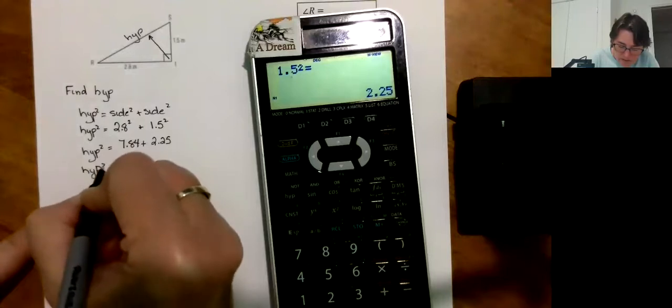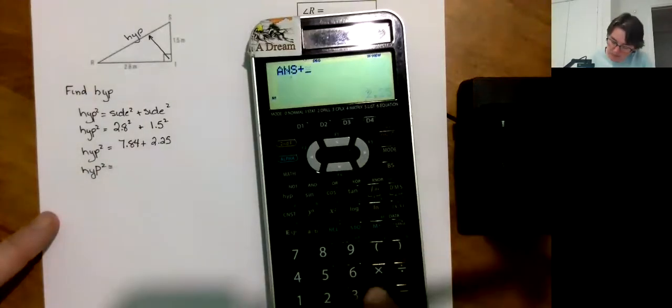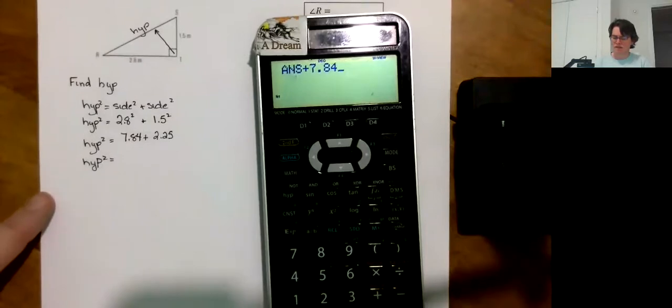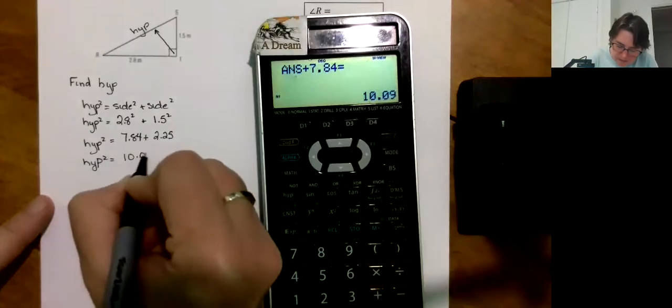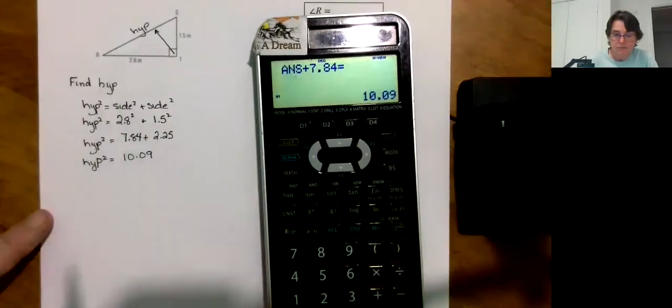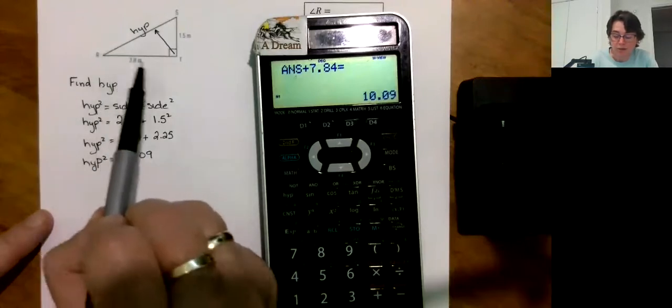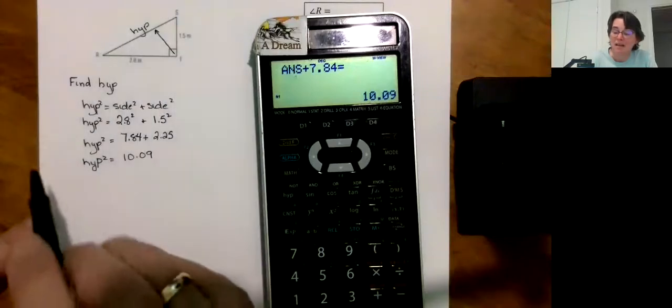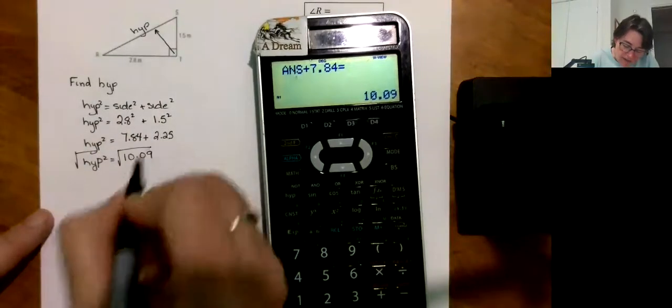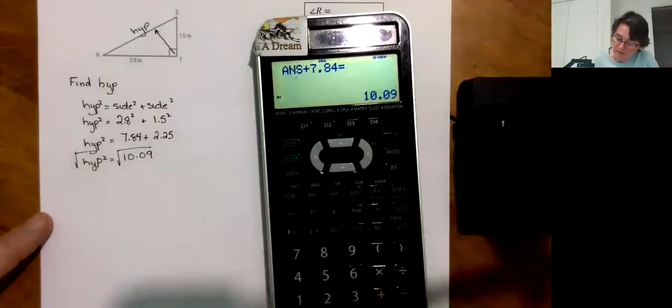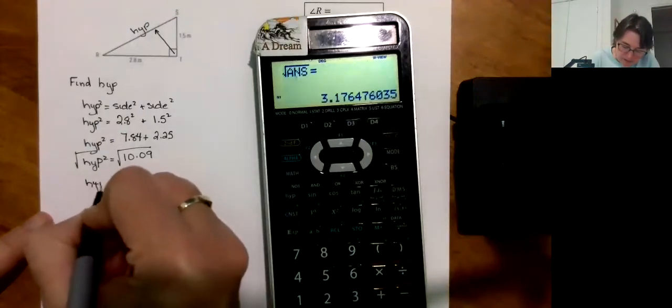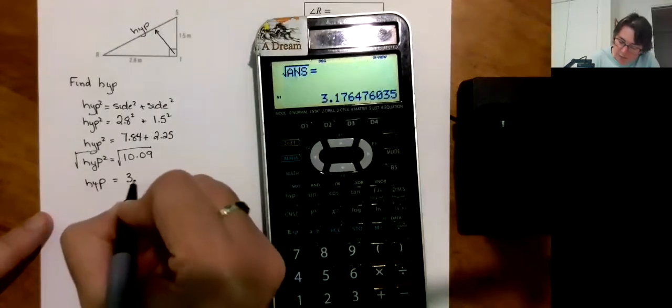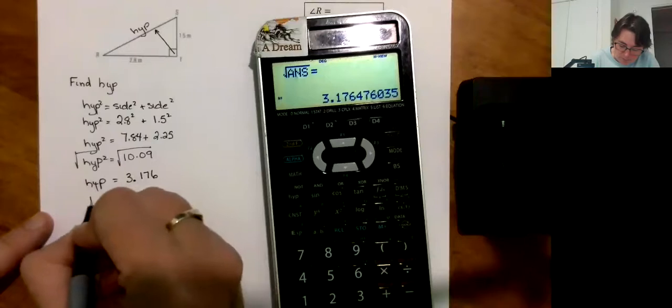So, hypotenuse squared is equal to 2.25 plus 7.84. Right, order doesn't matter when you're adding. So I can just use my previous answer. It's already there. 10.09.